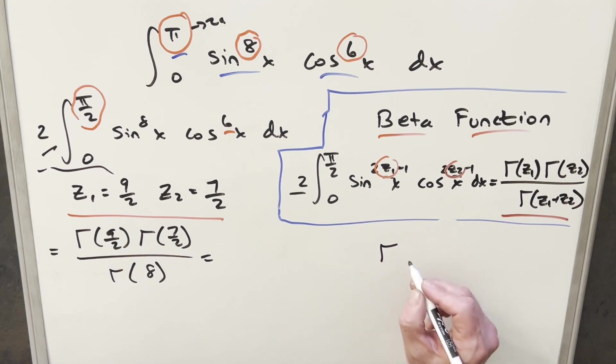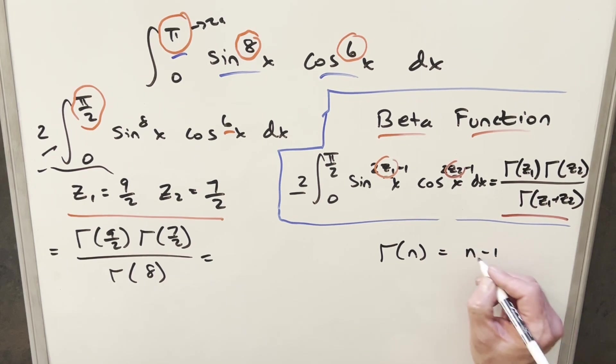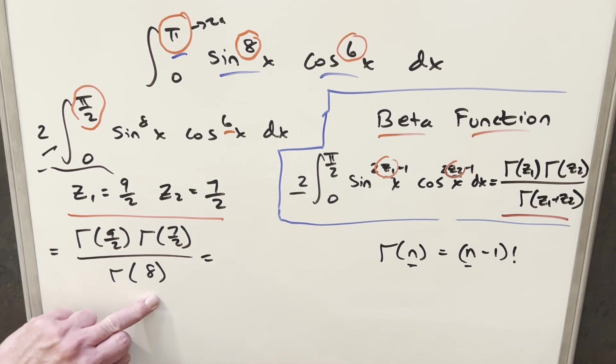Now from here, what we can do is use this formula for the gamma function and use it to express it in terms of factorials. For gamma of n, we can write this as n minus 1 factorial. Usually we do this when n is an integer. So for gamma of 8, we can write this as just 7 factorial.